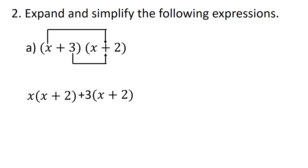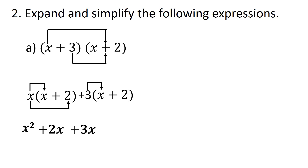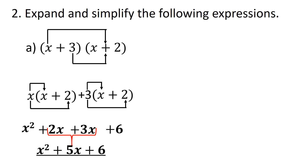Anything outside the brackets must be multiplied by every term inside the bracket. We begin: x multiplied by x gives us x squared, then x multiplied by positive 2 gives us plus 2x, then 3 times x gives us plus 3x, and plus 3 multiplied by plus 2 gives us positive 6. In the middle of this expression there are like terms: 2x plus 3x equals positive 5x. Therefore the answer is x squared plus 5x plus 6.